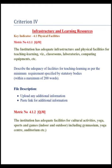There are four key indicators which carry 100 points in this criteria. The first one is physical facilities, carrying 30 points. Second one is library as a learning resource, carrying 20 points. Third one is IT infrastructure, carrying 30 points. And finally, maintenance of campus infrastructure, carrying 20 points.